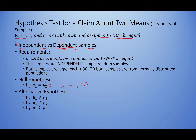Each of these alternative hypotheses could also be written in subtraction form: μ₁ minus μ₂ is not equal to zero, μ₁ minus μ₂ is less than zero, or μ₁ minus μ₂ is greater than zero. These are all equivalent ways to write these hypotheses.